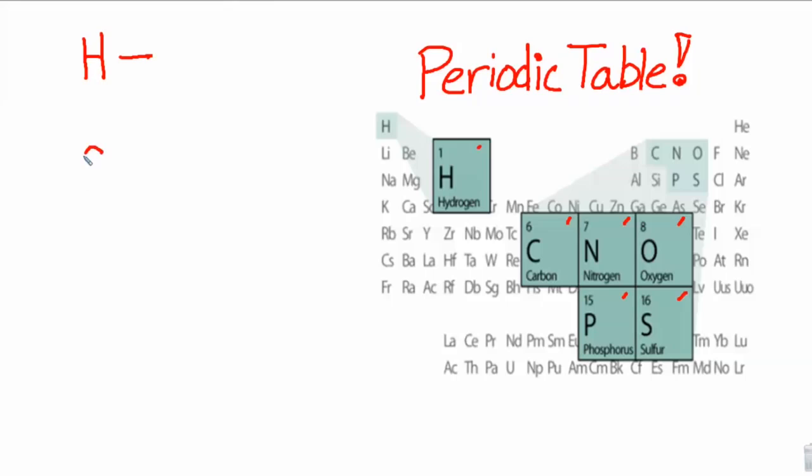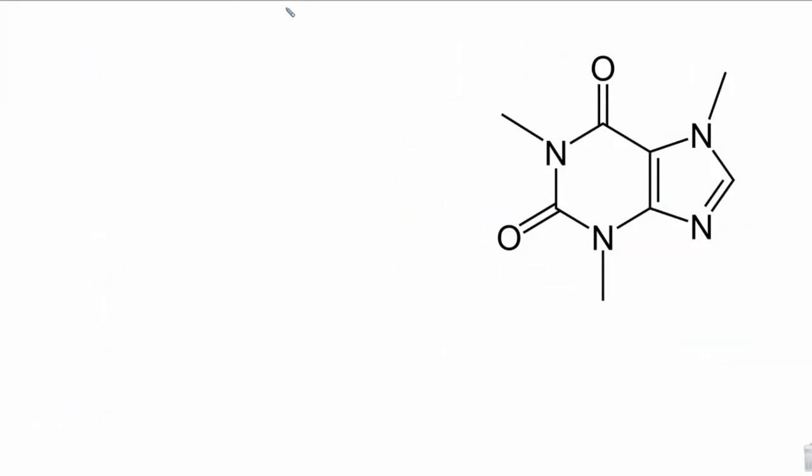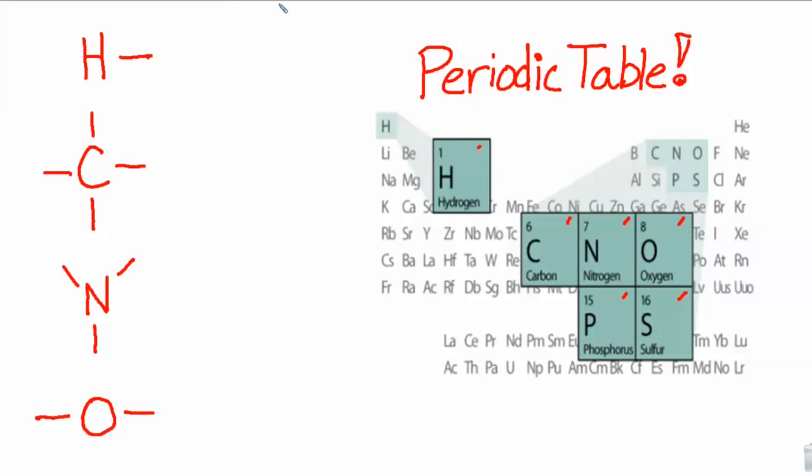Whereas carbon, carbon prefers to form four bonds, that means four lines. Nitrogen likes to make three bonds, and oxygen likes to make two bonds. So using these bonding rules, we can now construct larger molecules or combinations of these atoms. So let's take a look at one.